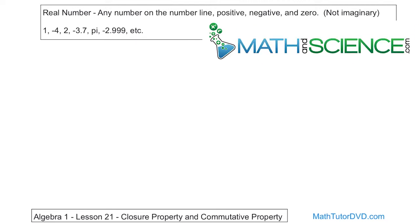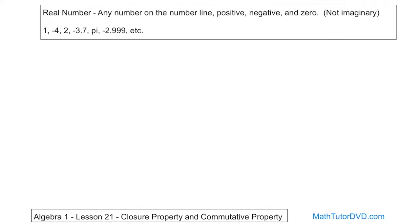The first thing we need to talk about is the idea of a real number. Basically, a real number is any number on the number line. I'll draw a picture in a second, but basically it's the numbers that go positive off to the right and also go negative off to the left. Any number on the number line: positive, negative, and zero.